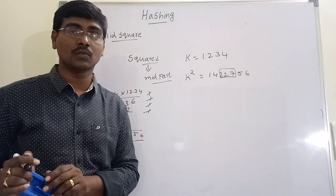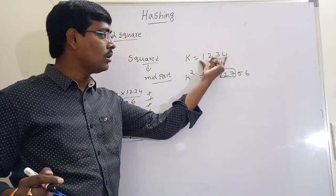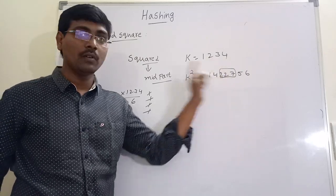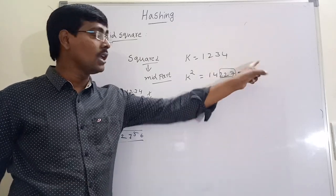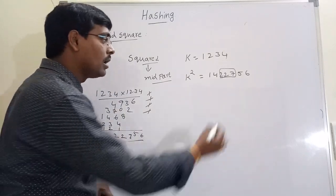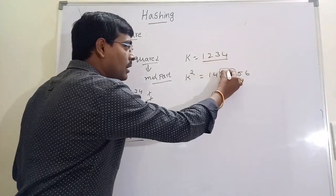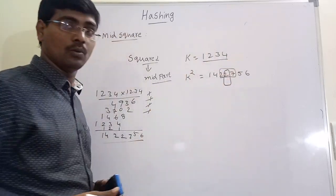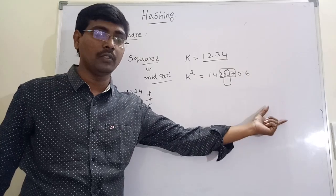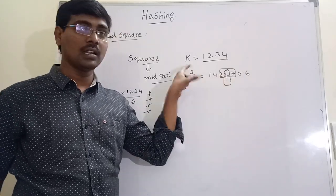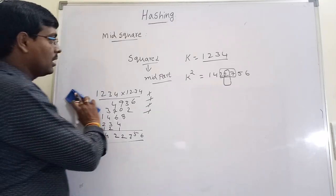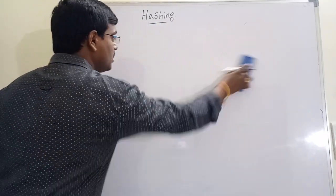Suppose the answer is 1,402,756. The middle part is selected — for example, if table size is 1000 we take three middle digits, and if table size is 10 we place the element at only one position, say position 2. Depending on the address width of the table size, we select the middle part element. This is the mid-square method.